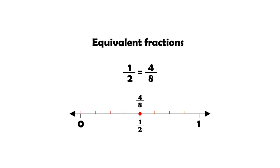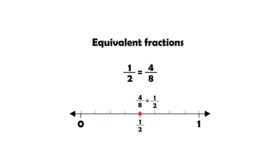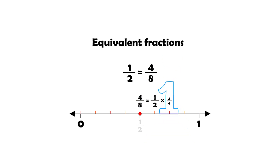Notice that each part of the original area in the number line is now made up of four parts. In other words, we multiplied both the numerator and denominator of our original fraction by four. We multiplied the fraction one half by four fourths, which should result in the same amount because four over four is equal to one.